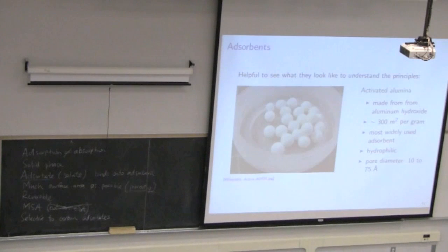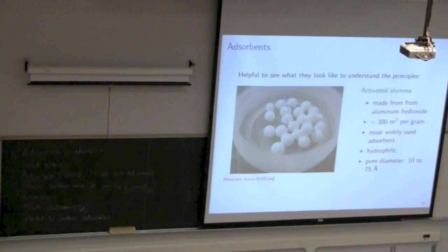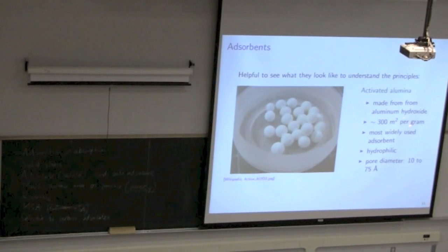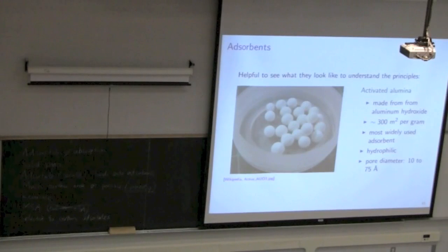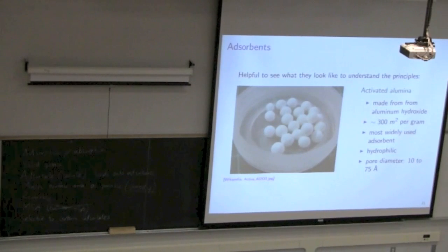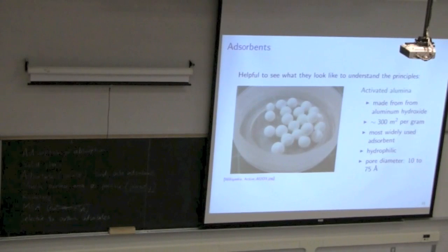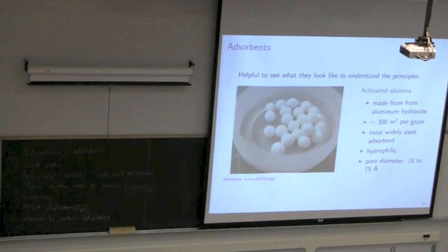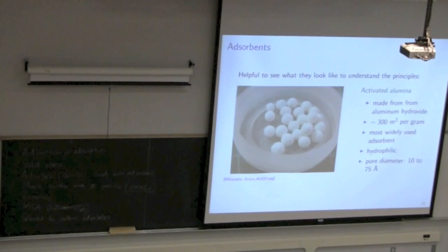Let's take a look at what some of these adsorbents look like. Here's activated alumina — one of the most widely used adsorbents. It has a fairly low surface area compared to some others, around 300 m²/g, but that's still substantial. The pore size ranges between 10 and 75 angstroms. Those activated alumina spheres are made artificially and contain a lot of porous space for material to diffuse in and attach.